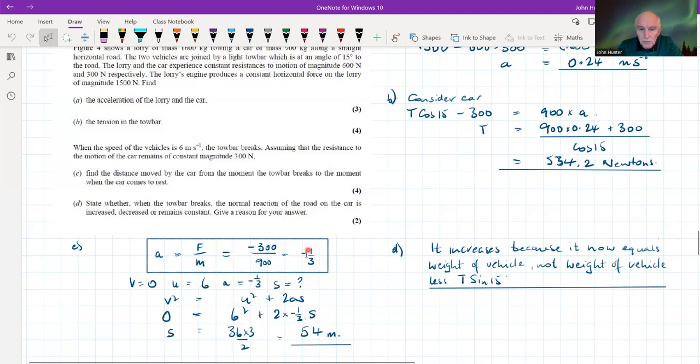A bit of kinematics. Let's write down what we know and what we want to know. V is naught, that's the final velocity. U is six, we're told that in the question. The acceleration is minus a third, and the distance, which is also the displacement, is what we want to know. V, u, a, and s, this is going to lead us to use v squared equals u squared plus 2as.